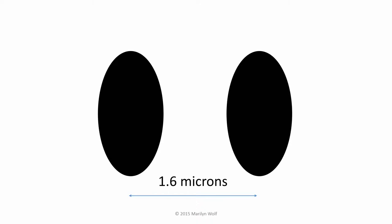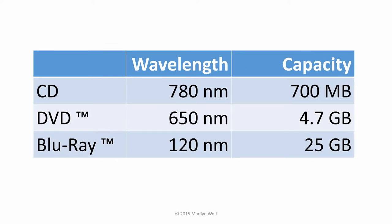DVD and Blu-ray use even smaller pits to get bigger densities. They also have to use lasers with shorter wavelengths in order to detect these smaller pits. Compact disc uses a laser with a wavelength of 780 nanometers — that's a red laser — and that gives us a capacity of 700 megabytes. DVD uses a laser with a wavelength of 650 nanometers, giving us 4.7 gigabytes of data. Blu-ray uses a 405 nanometer laser — that's a blue laser — and that gives us 25 gigabytes of data.